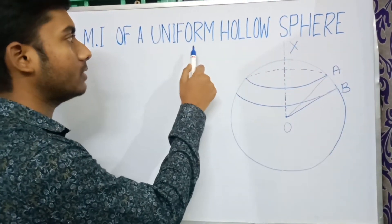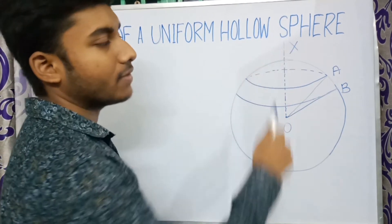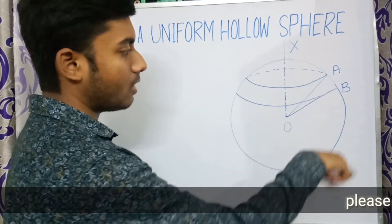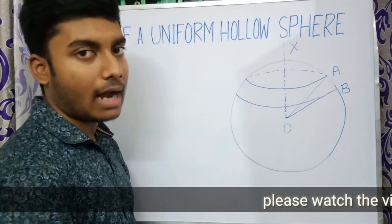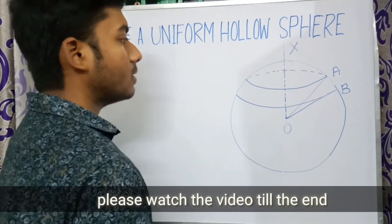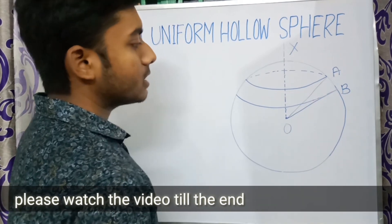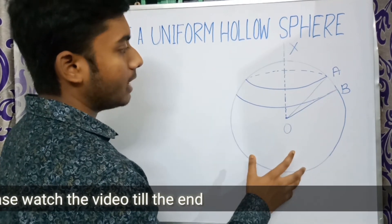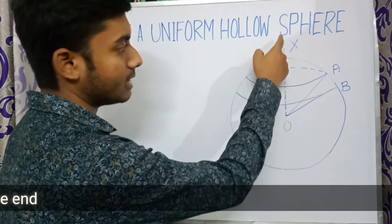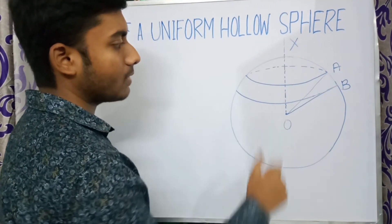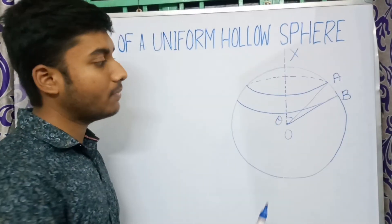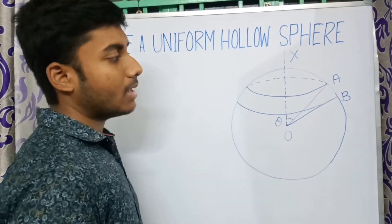Today our topic is the moment of inertia of a uniform hollow sphere. Suppose this is a uniform hollow sphere of radius R and mass M. We have to find the moment of inertia of the whole body about the axis OX, that is the diameter of the sphere.